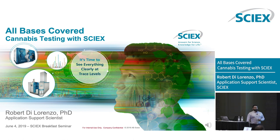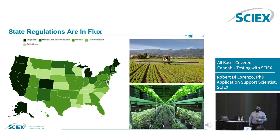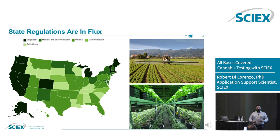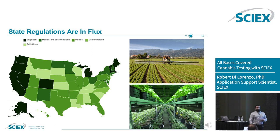In the US, the current state of cannabis is continuously in flux as new states come online in terms of regulation of the product itself. They also come online in terms of how it's regulated from a testing standpoint. As a new state comes online, they set new testing requirements, and these are really important because as this commodity continues to grow, there may be some foul play in terms of trying to increase crop yields, so we need to really keep this product safe for consumers.